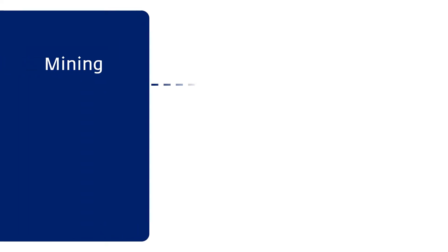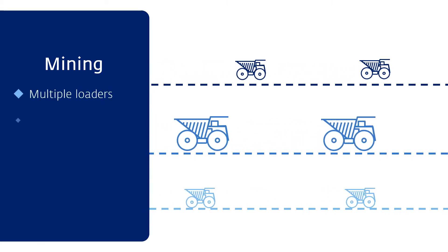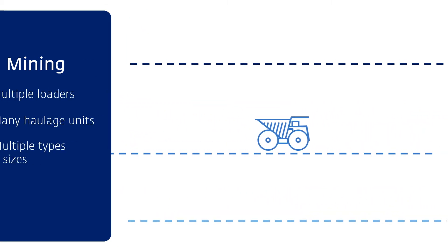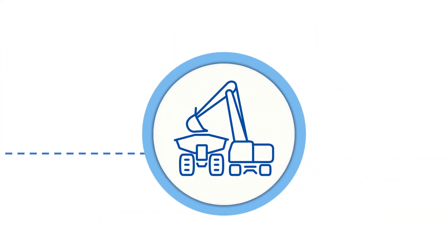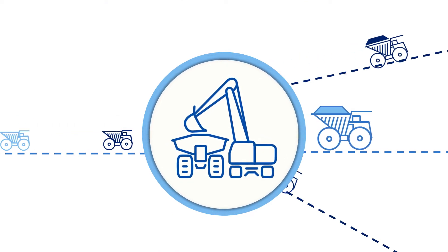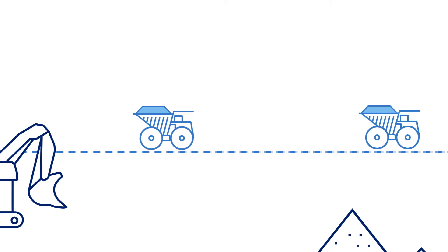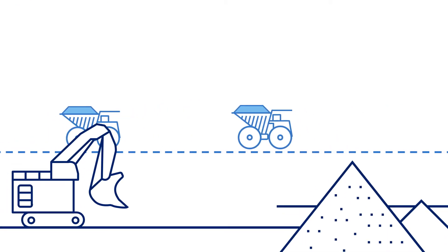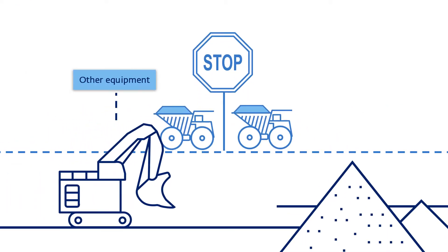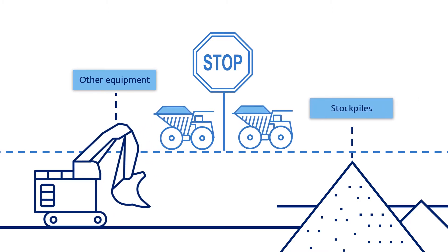In mining, the environment is dynamic. You have multiple loaders, many haulage units, and often multiple types and sizes. Trucks loaded at a single source may be sent to different destinations, depending on what they are carrying. When they are traveling, they will have multiple interactions — not just with other equipment, but also with mine infrastructure like crushers and stockpiles.